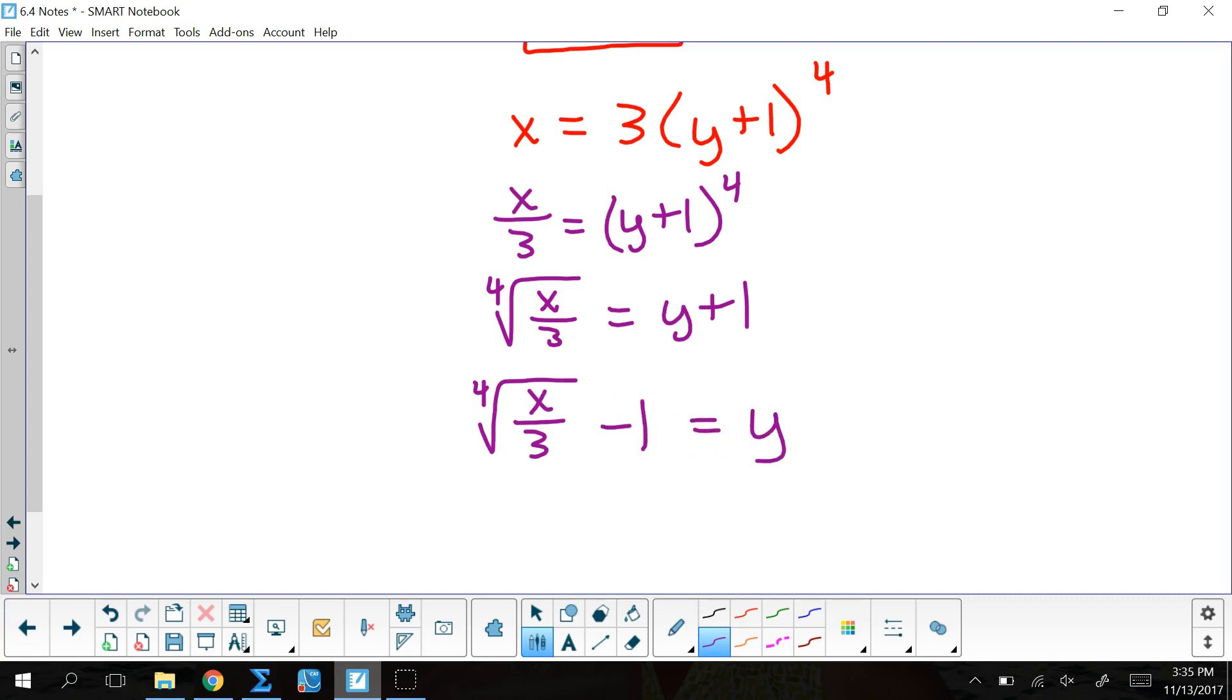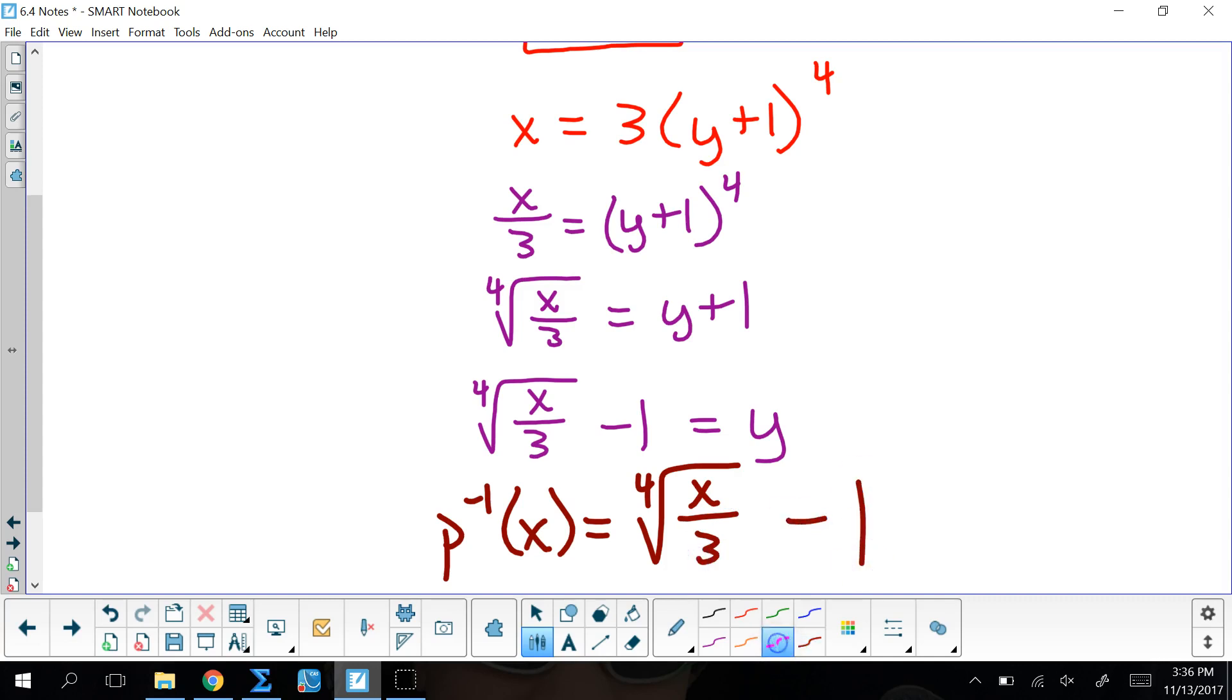They might look funky, but when it's all said and done, the inverse of p is equal to the fourth root of x over 3, and then minus 1.